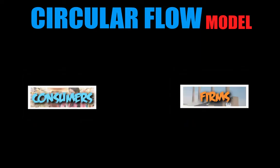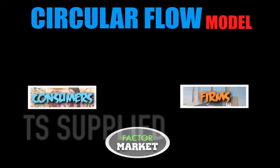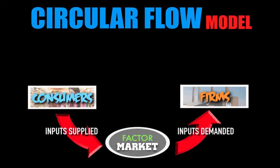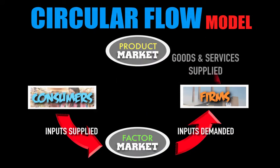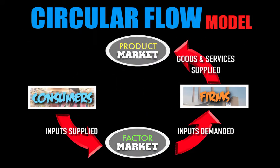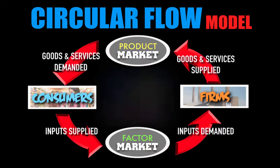The Circular Flow Model begins with consumers and firms. Both of these market participants interact in one of two markets in the domestic economy. The first is the Factor Market, where consumers own and supply inputs demanded by firms to produce products. The second is the Product Market, where firms supply goods and services to meet consumer demand. Standing by to assist when one of these markets fails is government.